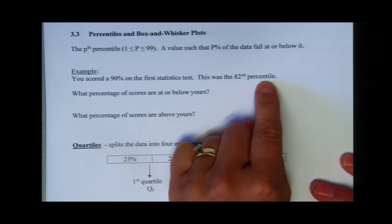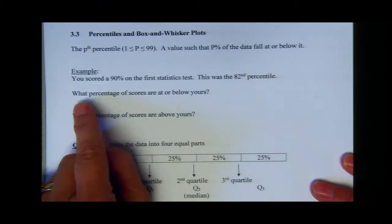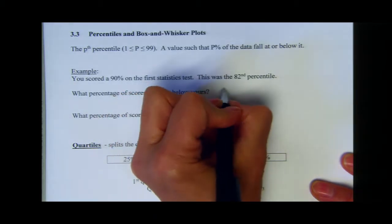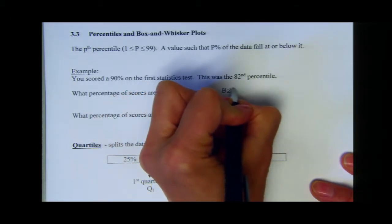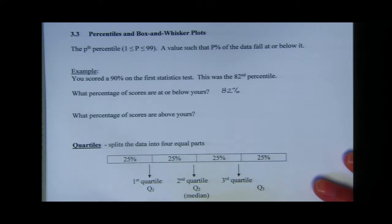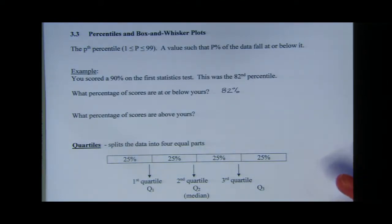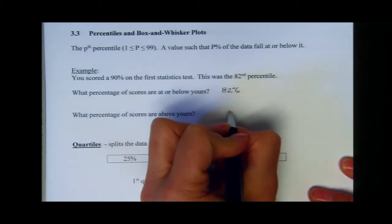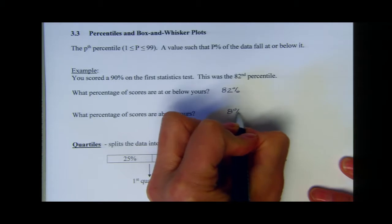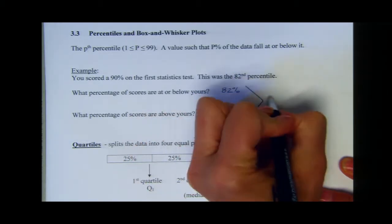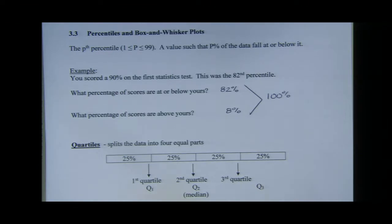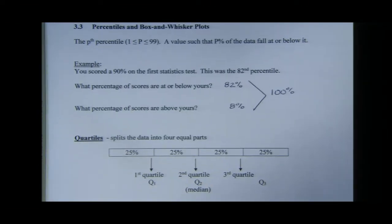Percentile means at or below. So if you were asked what percentage of scores are at or below yours, that would be 82%. What that means is 82% of the rest of the class scored a 90 or below. So what percentage of scores are above yours? That would be 18%, because everything has to add up to 100% of the data. That's a quick rundown on what percentiles are.